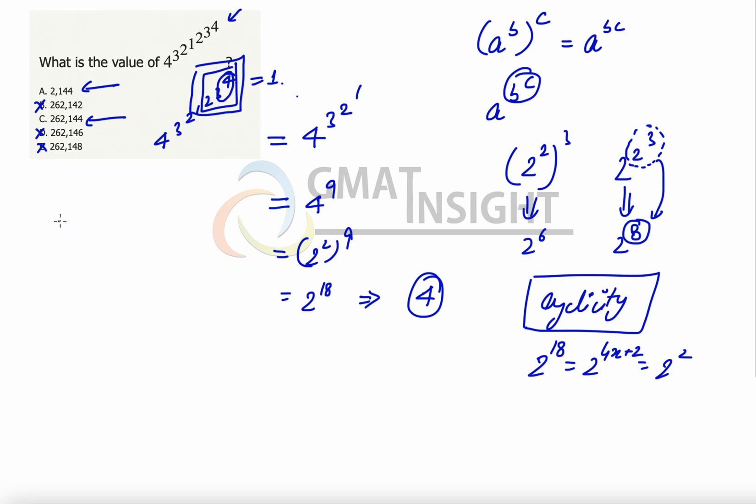Now let's also understand the exponents of 2 should always be remembered up to 2 raised to the power 10 because that sometimes is useful. 2 raised to the power 10 is 1024, and 2 raised to the power 8 is 256.